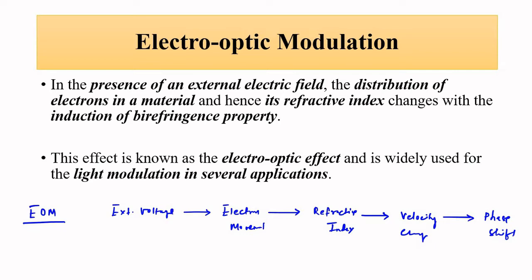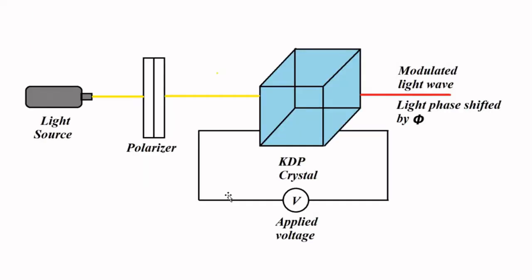The basic setup of electro-optic modulation consists of, first, a light source which can be an LED or laser. For optoelectronic communication purposes these are the two primary optoelectronic sources; we will discuss LEDs and lasers in upcoming videos. Then there is a polarizer. The polarizer's basic objective is to restrict the electric vectors to one plane, to bring about plane-polarized light.